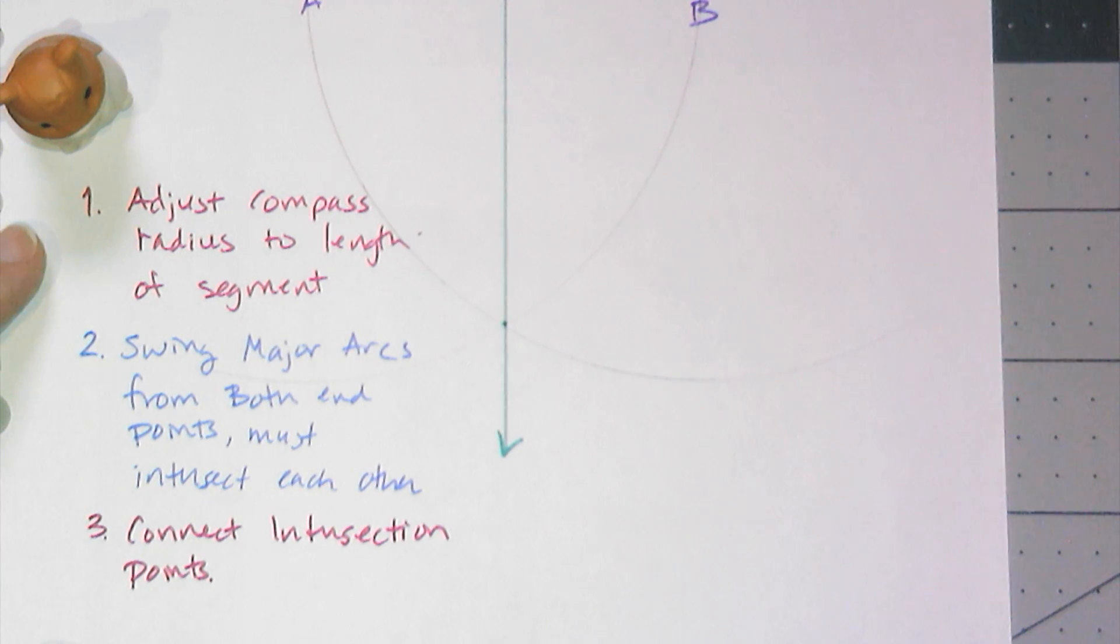So here are the steps written out. Make sure you copy them for whenever you need to construct a perpendicular bisector of a line segment.